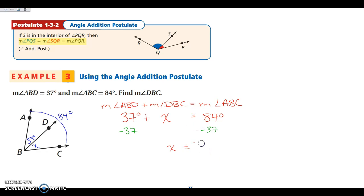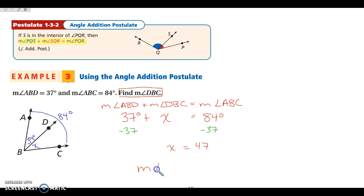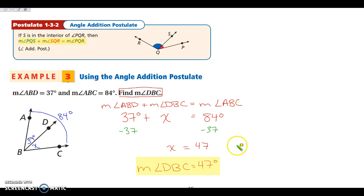So 47, not 7. Go back and reread what we're looking for — we want to find the measure of angle DBC. That is what we made X. So the measure of angle DBC is equal to 47 degrees. Any questions, please write it in your note-taking guide.